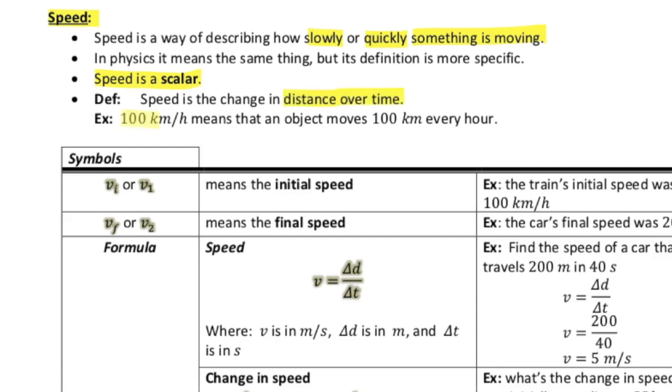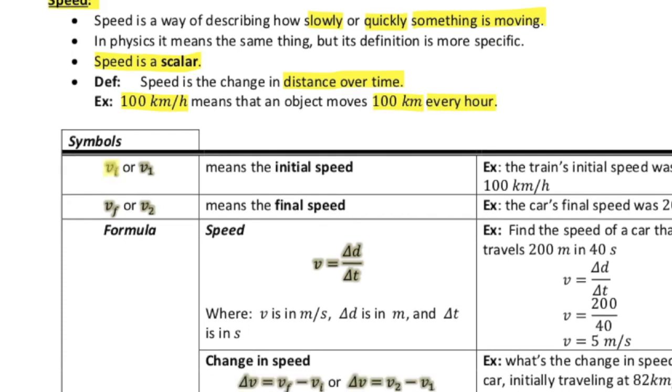So for example, if you're traveling at 100 kilometers per hour, that means that you're moving 100 kilometers for every single hour. And that's what that rate means. So again, VI or V1 means initial speed. VF or V2 means final speed.